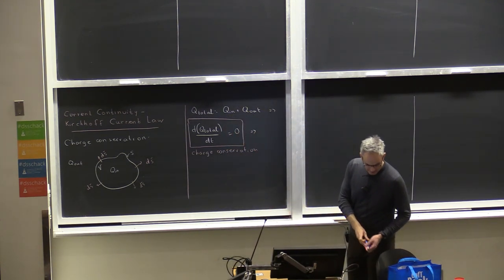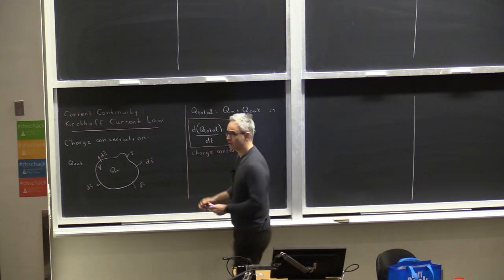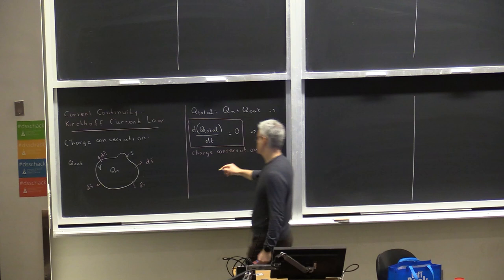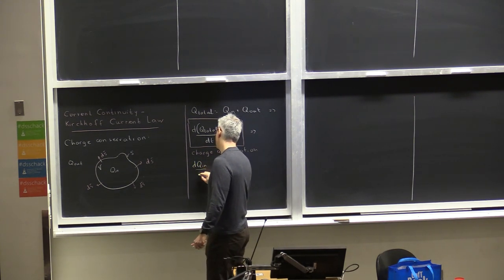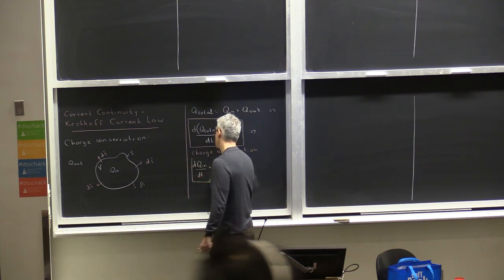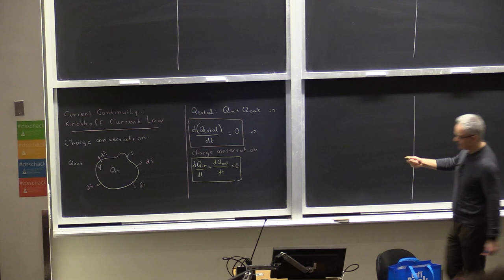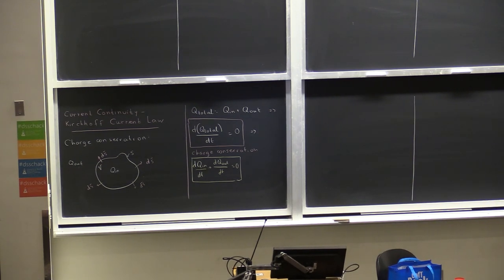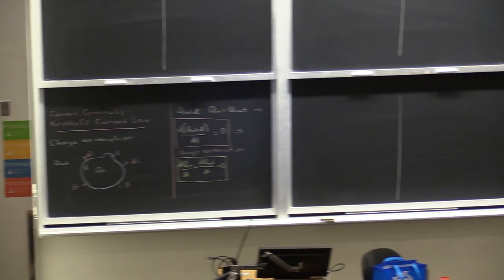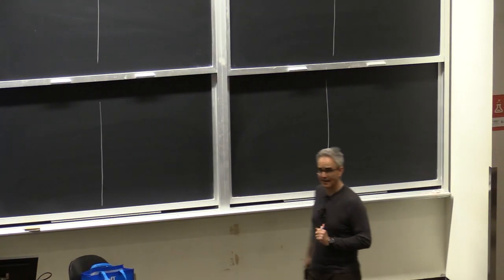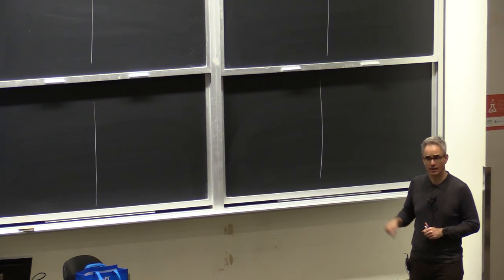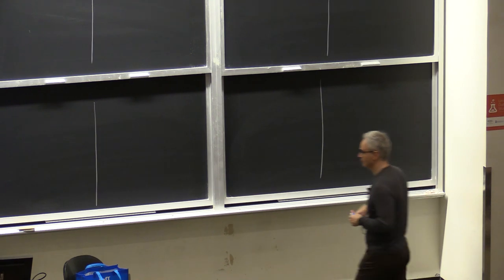Charge conservation means the time derivatives of the inside and outside charge have to be exactly opposite to each other: dQ_in/dt + dQ_out/dt = 0. The charge inside cannot increase unless the charge outside decreases. If one nanocoulomb escapes the interior, the interior has one nanocoulomb less and the exterior has one nanocoulomb more. That is a simple concept.